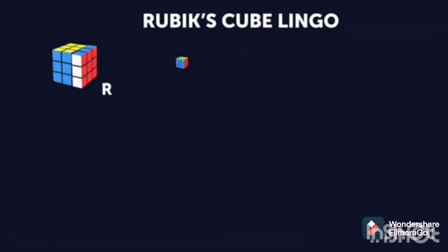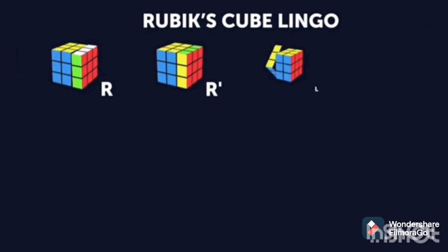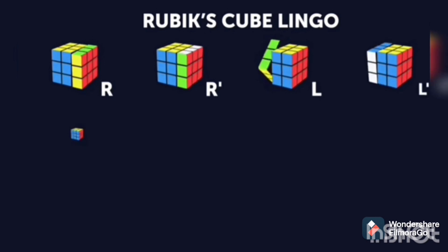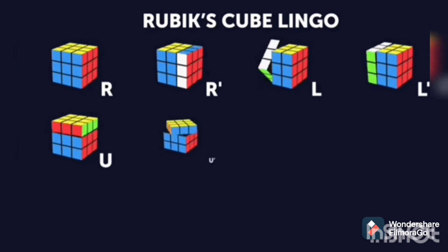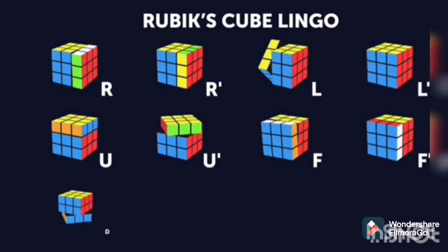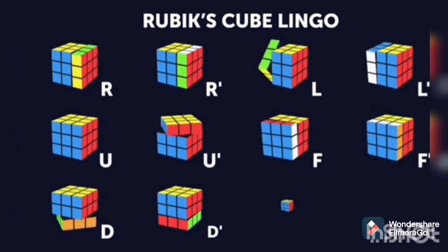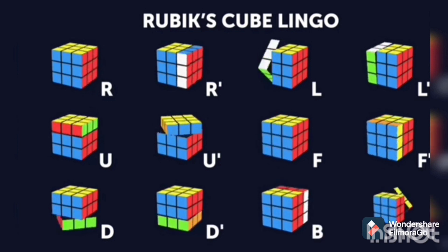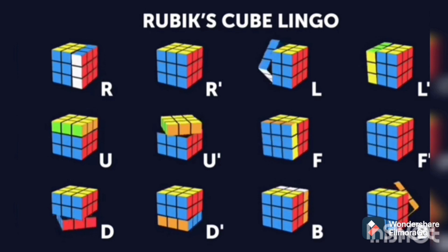Now you have to learn the Rubik's Cube lingo. R means right, L means left, U means up, F means front, D means down, B means back.